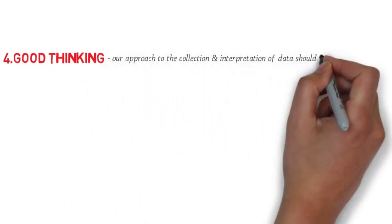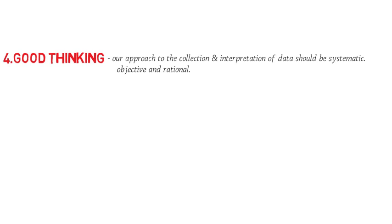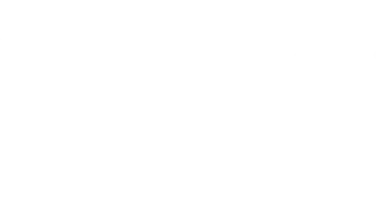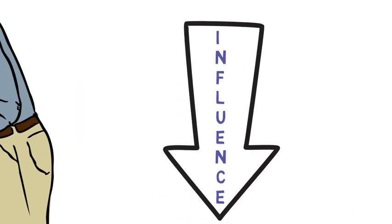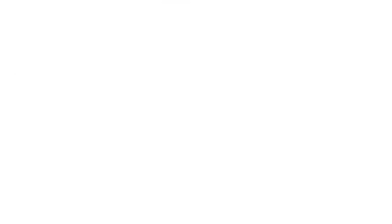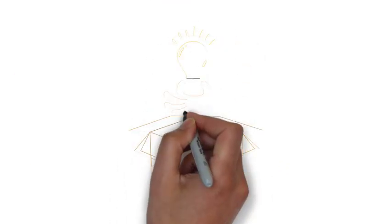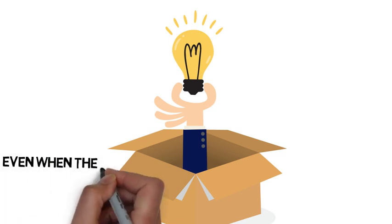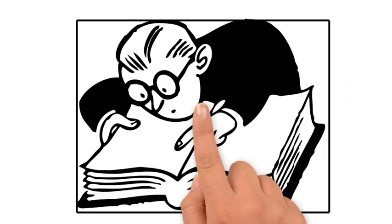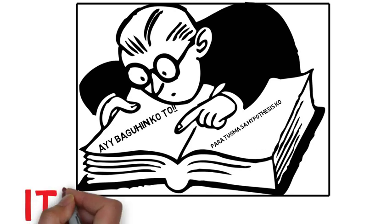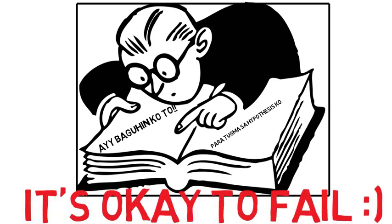Next, a central feature of a scientific method is good thinking. Our approach to the collection and interpretation of data should be systematic, objective, and rational. As researchers, we should avoid letting private beliefs and expectations influence observations or conclusions. Good thinking includes being open to new ideas even when they contradict our prior beliefs. Kaya when it comes to data gathering, kapag hindi natin nakuha yung result na gusto natin, hindi dapat natin itupaguhin. Dapat maging open tayo sa failures and experiments natin.